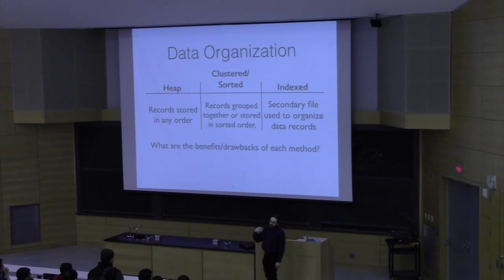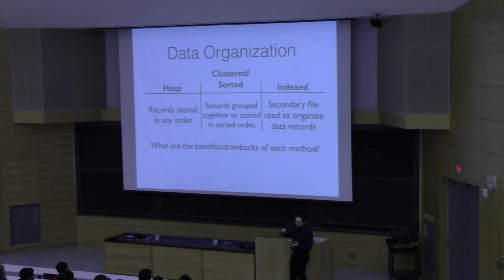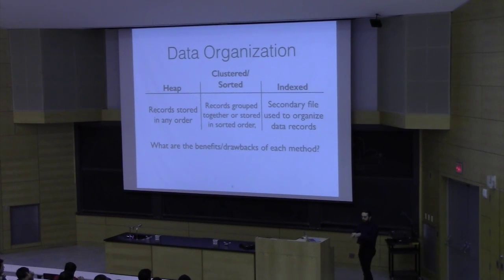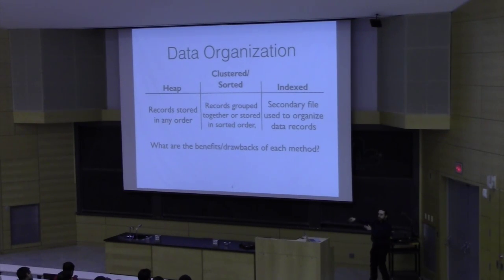How does an index work? An index is built with respect to either a heap or a clustered data set. The idea of an index is that it has pointers. For example, an index could say everyone with the first name Oliver starts at this particular byte in the sorted file, or there are three people with the first name Oliver and they exist at bytes 5,000, 6,000, and 8,000 in this heap file. It basically stores pointers into an actual data file. It's going to be much more efficient than doing a full scan over the entire table, particularly if the index is on a very selective attribute.